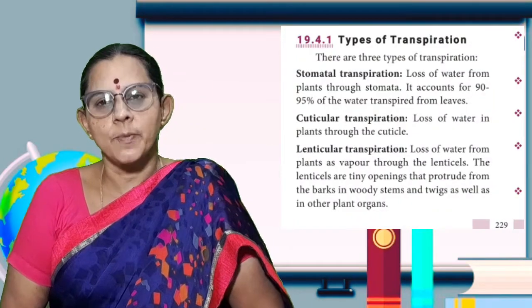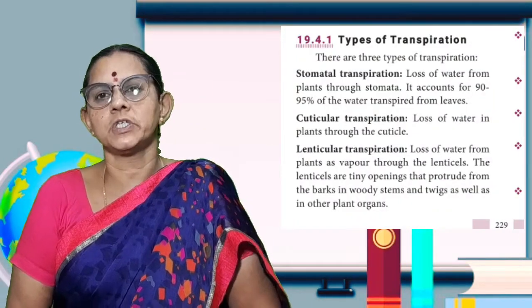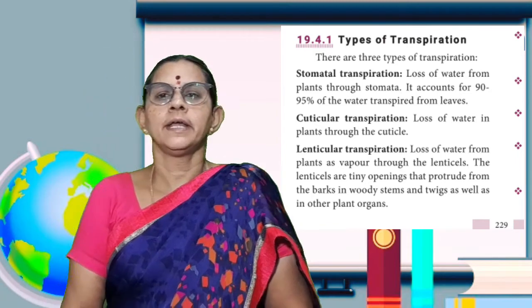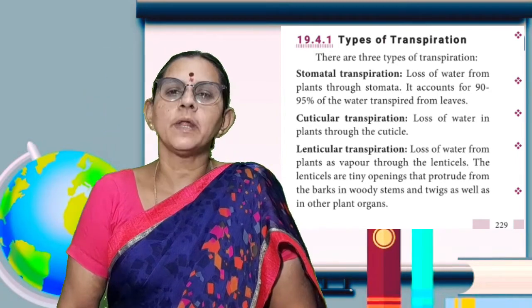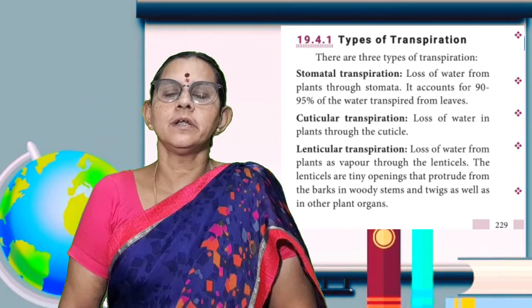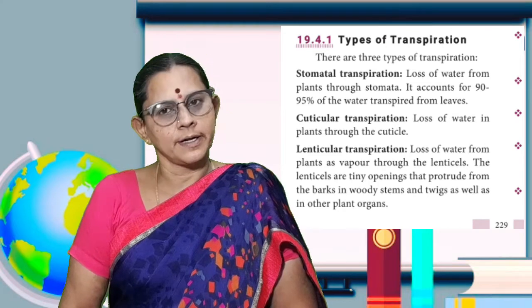Transpiration is called a necessary evil for the plants. Transpiration has different types. First is stomatal transpiration, then cuticular transpiration, and then lenticular transpiration.